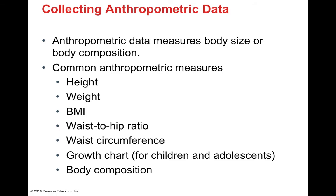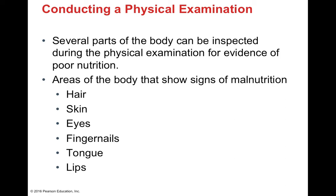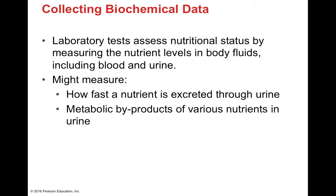Anthropometric data is used to measure body size and body composition, including height, weight, BMI, waist-to-hip ratio, waist circumference, growth charts for children and adolescents, and body composition. A physical examination can check for signs of malnutrition in hair, skin, eyes, fingernails, tongue, and lips. Biochemical data is collected by laboratory tests to assess nutrient levels in body fluids including blood and urine, measure nutrient excretion, and evaluate metabolic byproducts of particular nutrients.